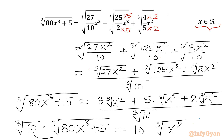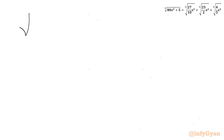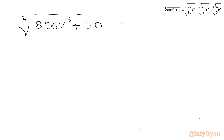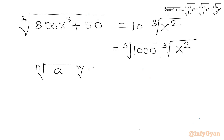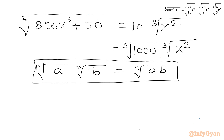Now I will take this 10 into the radicand. Multiplying with 10, LHS becomes cube root of (800x³ + 50). And the RHS will become 10 times cube root of x². We can write this 10 as cube root of 1000. Using the property of radicals — nth root of a times nth root of b equals nth root of (a·b) — RHS will become cube root of (1000x²).